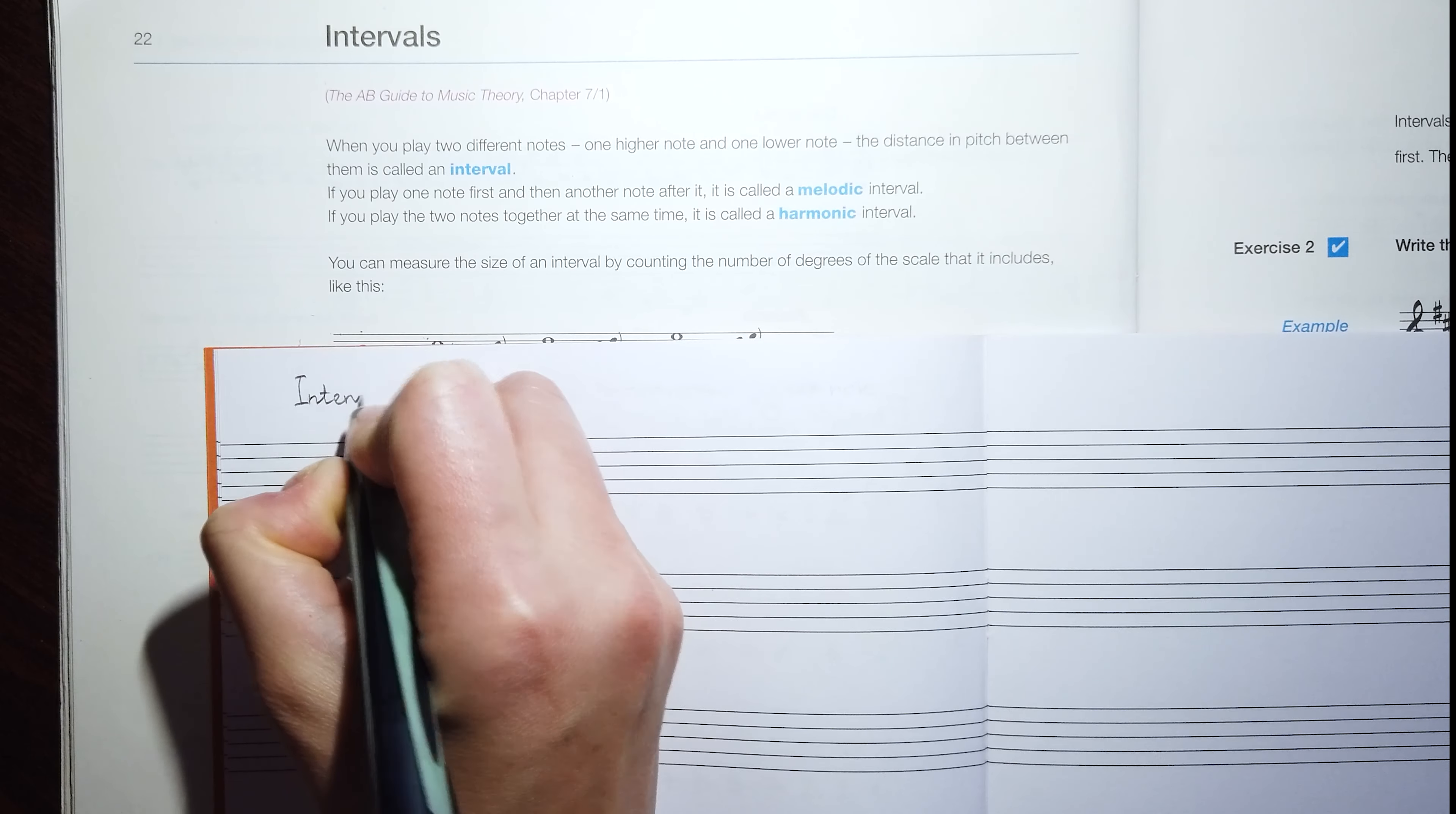So we count from the D to another D, we name it octave. These are all the intervals which you can see here. They were written for you in the harmonic form because all the notes were written one above another, and the next ones we're going to write will be in the melodic way.